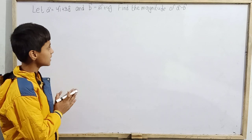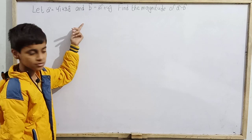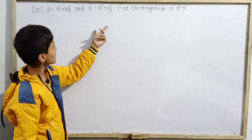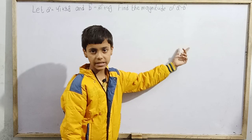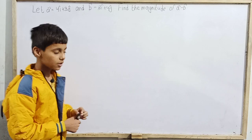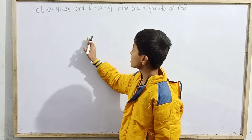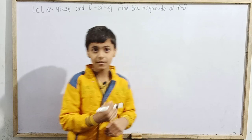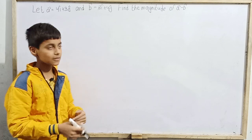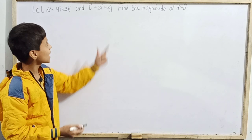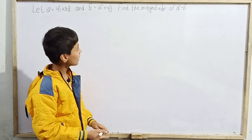The question is from the famous book H.C. Verma, Concepts of Physics, from the chapter Physics and Mathematics — question number 4. The question asks: Let vector A equal 4i cap plus 3j cap, and vector B equal 3i cap plus 4j cap. Find the magnitude of vector A minus vector B.